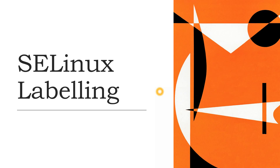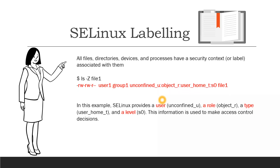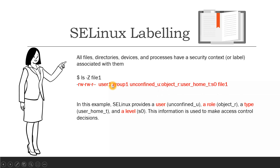Hello everyone, Dimpal here, welcoming you all to today's session on SELinux labeling. In SELinux, all files, directories, devices, and processes have a security context, which is a label associated with them. Every file, process, device, and directory will have a label associated with them. On systems running SELinux, all processes and files are labeled in a way that represents security-relevant information.